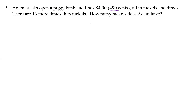The coins are all nickels and dimes, and there are 13 more dimes than nickels. We also want to know how many dimes he has, because we need both to check the answer. So let's say X equals the number of nickels, and then X plus 13 is the number of dimes.